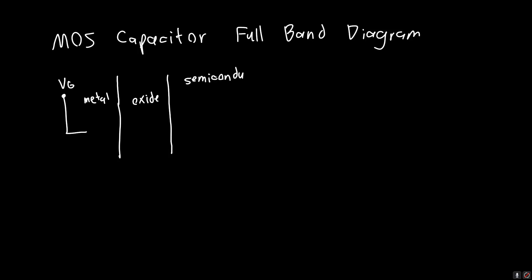In this video, we're going to talk about the MOS capacitor full band diagram or the MOSFET full band diagram. In the last video, we talked about how we were applying some voltage to the gate of a MOS capacitor. We said that there's some metal here and some oxide here, and what we're really interested in is the semiconductor, so we're really interested in the band diagram of the semiconductor.